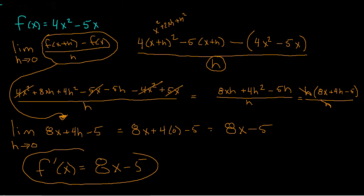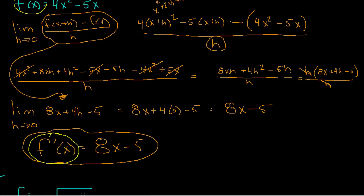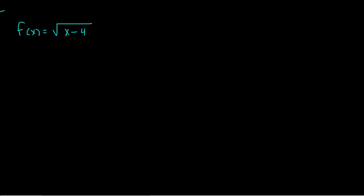A function finds y — you plug in x, you get y. A derivative: you plug in x and you get the slope of the tangent line at any given point on that function. All of that process is called differentiation, and the final result is the derivative. Let's do another one.